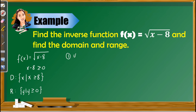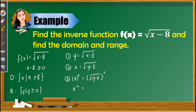Step 1: change f(x) to y. Step 2: interchange x and y. Step 3: solve for y. Since y is inside the radical sign, we remove it by squaring both sides, giving x² = y − 8. We then isolate y, so y = x² + 8. Step 4: write in terms of f inverse, giving f⁻¹(x) = x² + 8.